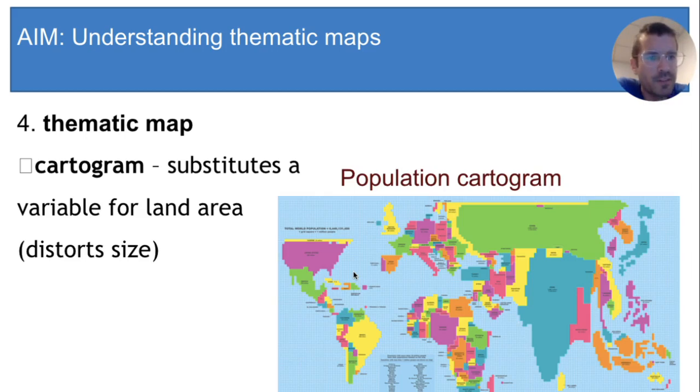And the last type of map is really cool. It's called a cartogram. Cartograms substitute some variable for land area, which distorts the size of land and shows different values. In this cartogram of world population, countries are drawn not according to how they really look, but according to how many people live in them.